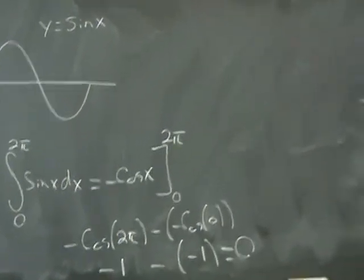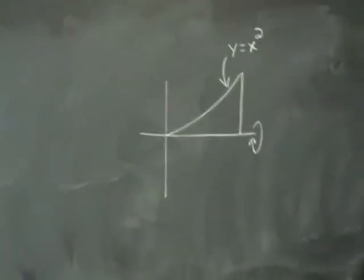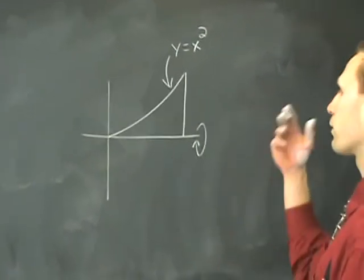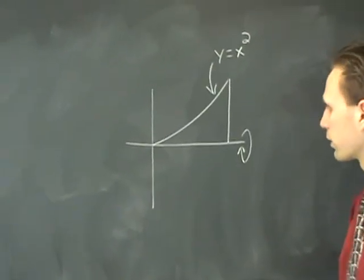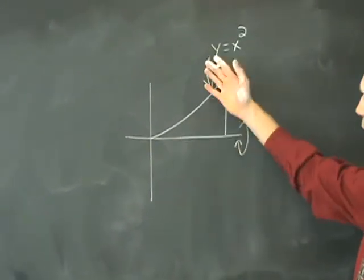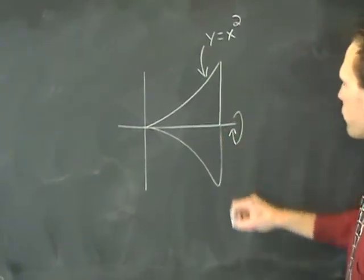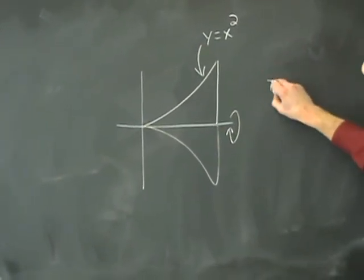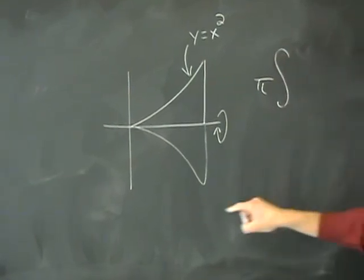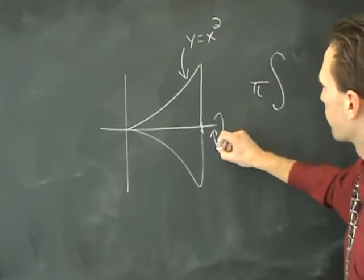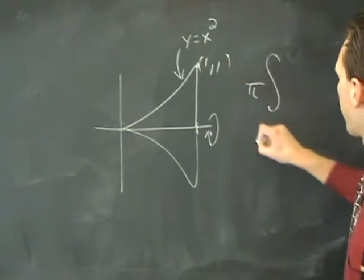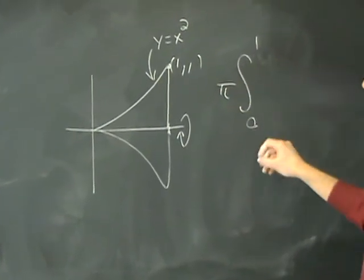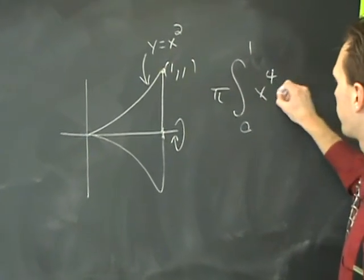The last example here, it also applies to solids of revolution. Finding the volume of the solid resulting when this region is revolved about the X-axis. So you use your formula for the volume of the solid, and it's going to be pi times the integral from 0 to 1 of the function squared. So that's X to the fourth DX.